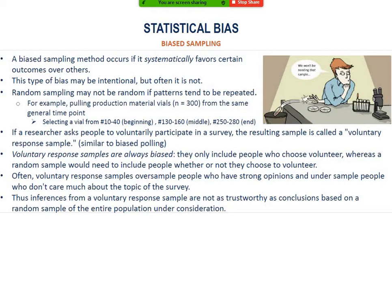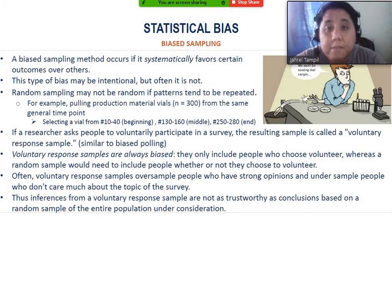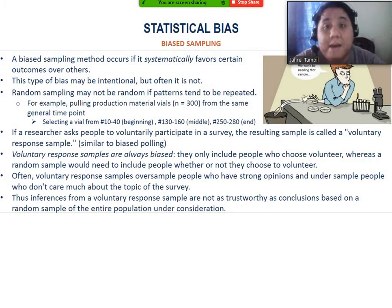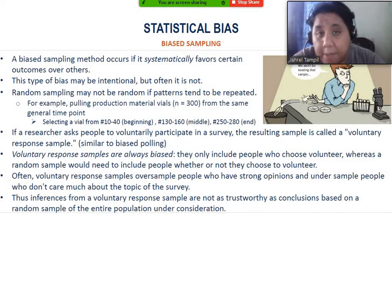Voluntary responses are always biased — they only include people who choose to volunteer. Voluntary response samples often oversample people who have strong opinions and undersample people who don't care much about the topic of the survey. Thus, inferences from a voluntary response sample are not as trustworthy as conclusions based on a random sample of the entire population under consideration. In future lessons, we will learn techniques for getting a sample to avoid biased sampling.